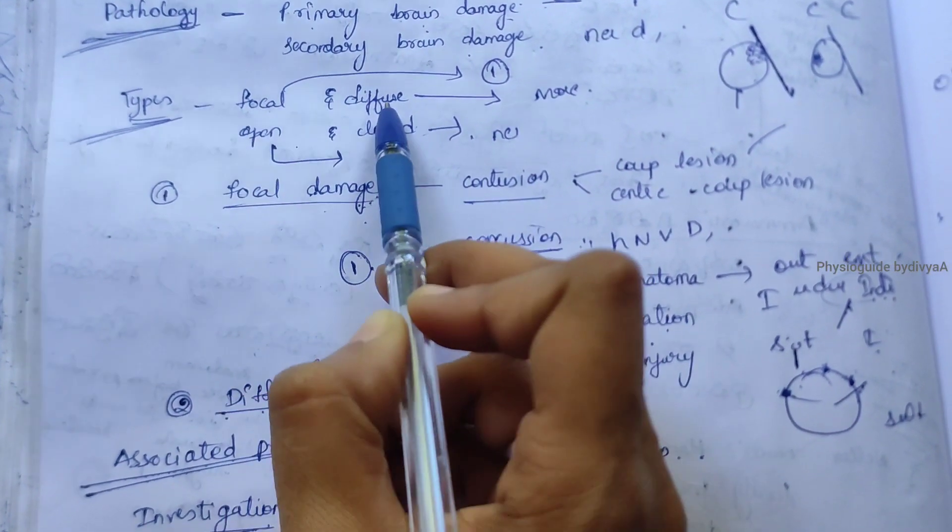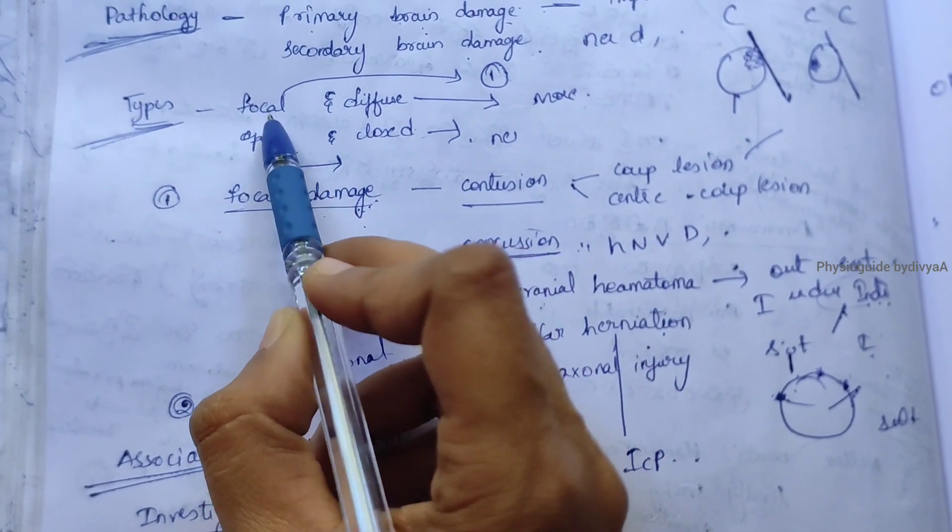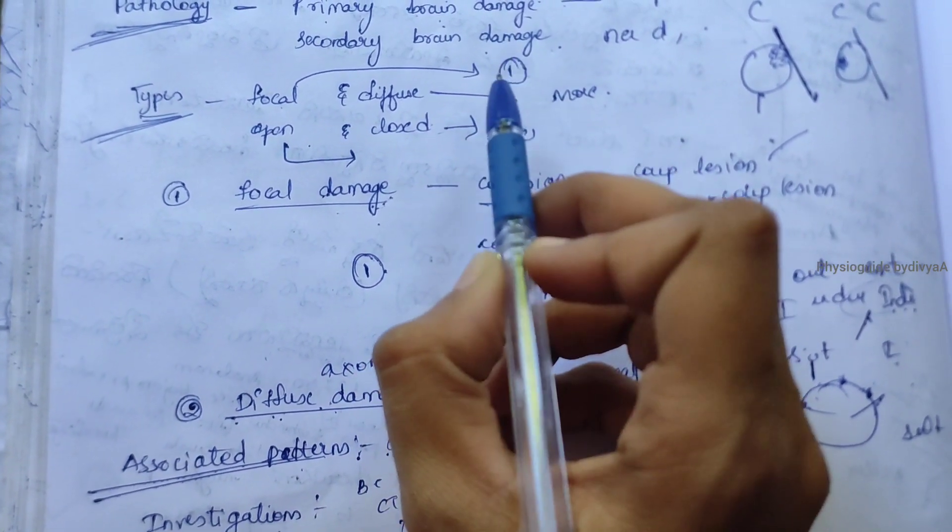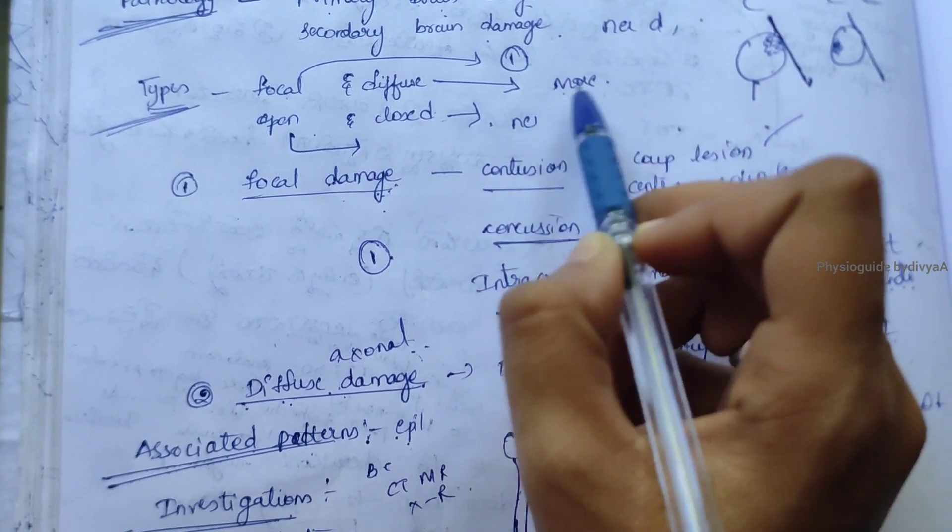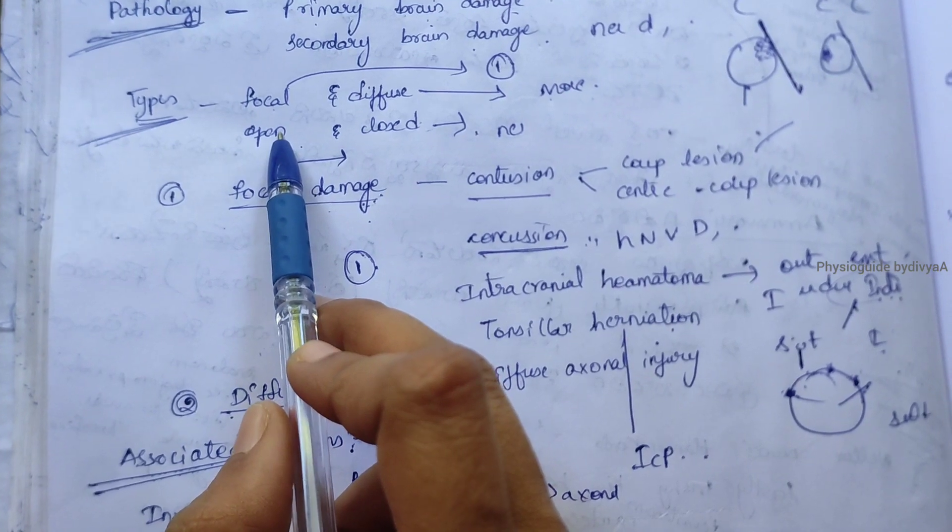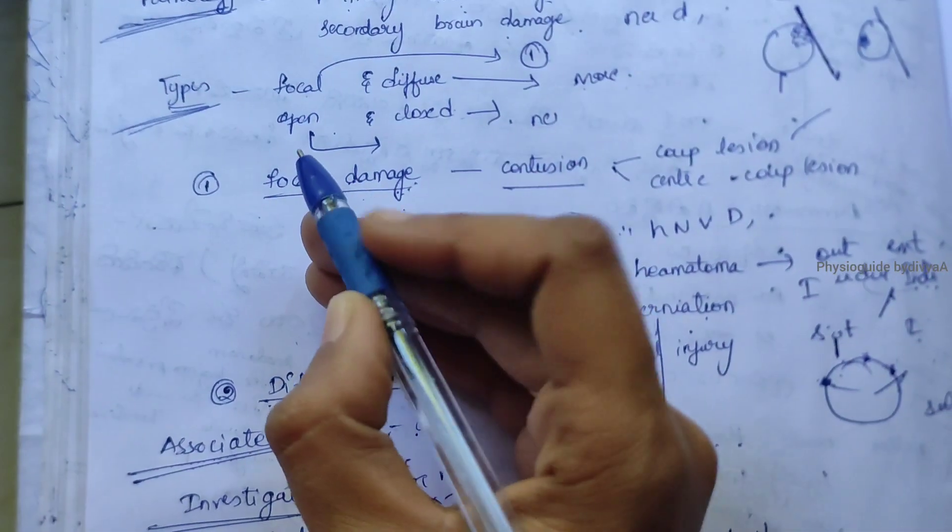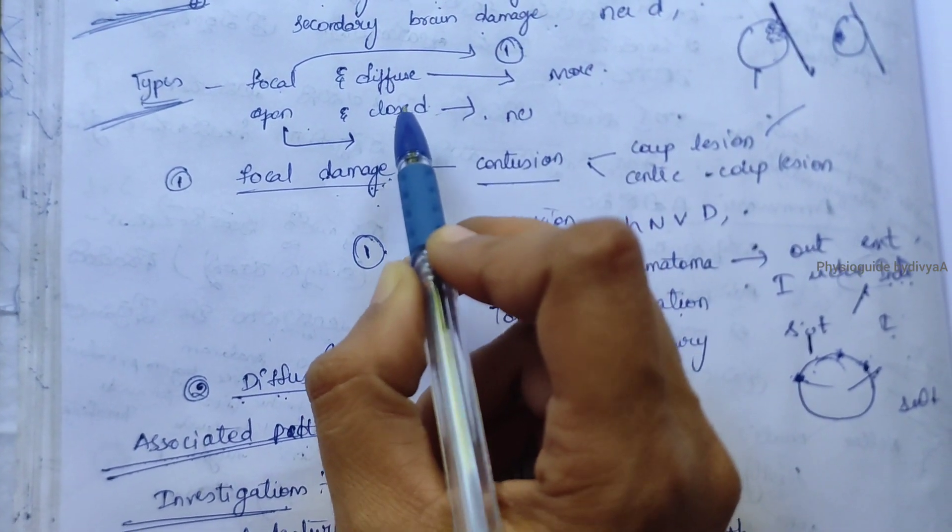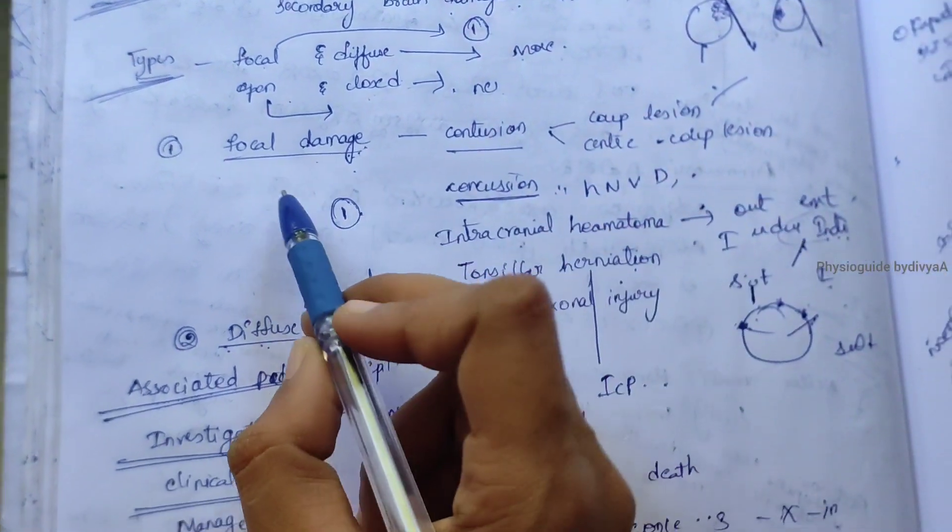Types include focal and diffuse, open or closed injury. Focal means the injury happens in only one area of the brain. Diffuse means it happens in more than one area. Open injury is very dangerous and life-threatening because infection may directly enter. Closed injury has no skull injury, only internal neurological or tissue damage.